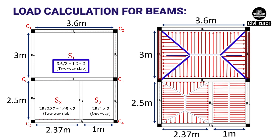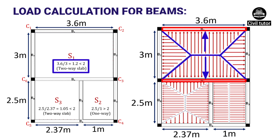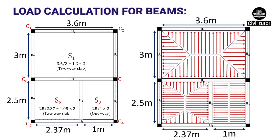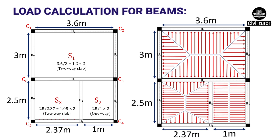The triangular loadings of slab S1 are carried by beams B2 and B7, and the trapezoidal loadings are carried by beams B1 and B6. For slab S2, the aspect ratio is 2.5 / 1 = 2.5, which is greater than 2, indicating S2 is a one-way slab, with loads carried by beams B3 and B5. For slab S3, the aspect ratio is 2.5 / 2.37, which is less than 2, indicating it is a two-way slab, with load carried by beams B4, B5, B6, and B8.